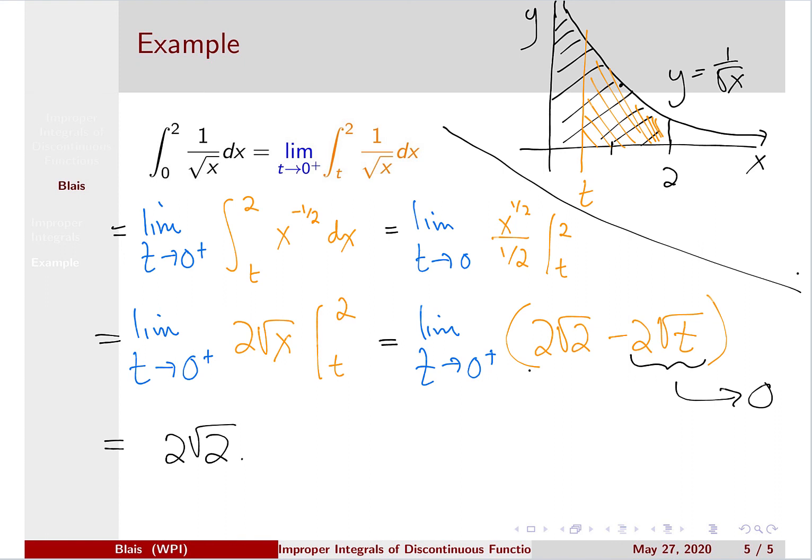So the area below the curve y equals 1 over √x from 0 to 2 is exactly 2√2.